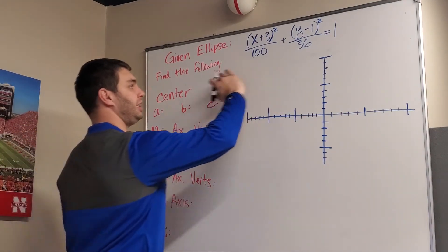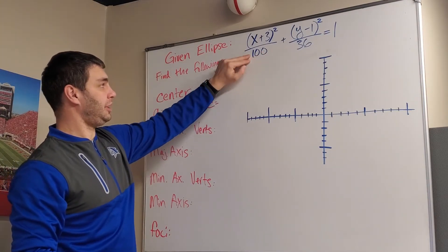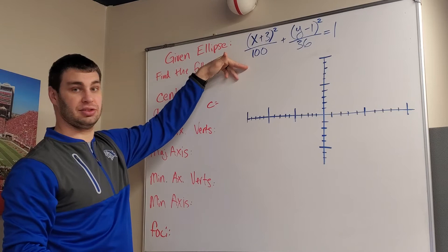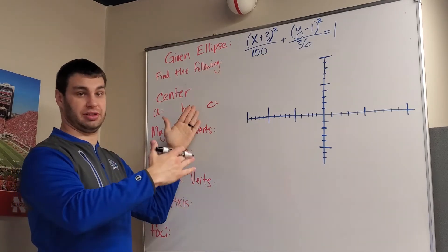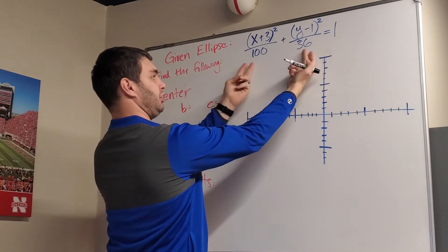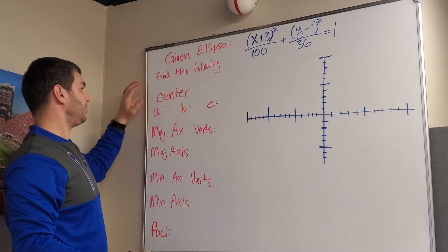Okay, first off, this is already in standard form because we notice that the denominator underneath the x's is larger than the denominator underneath the y's. Whichever denominator is larger comes first. That's standard form. If the y's are larger, those would flip-flop. But the x's are larger, so it's like this.